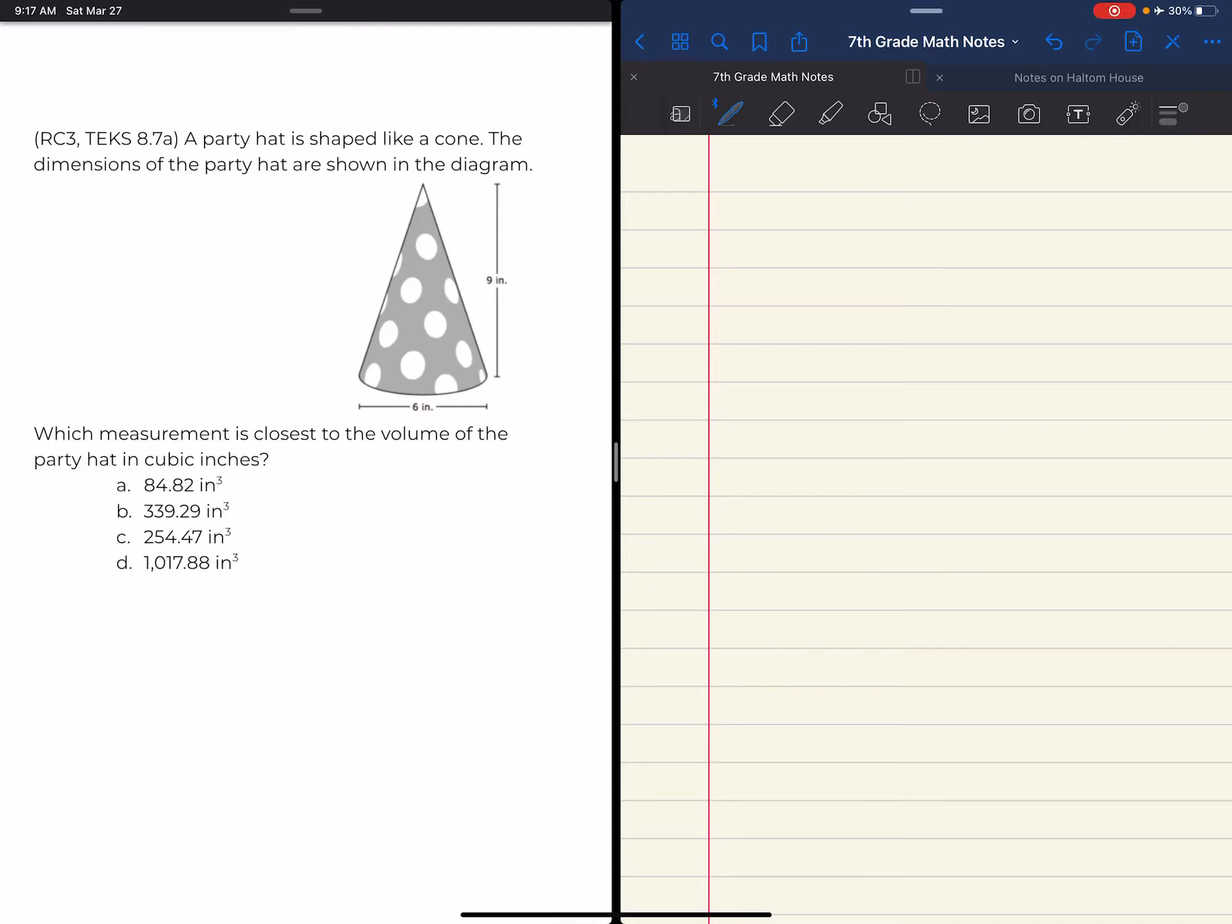Okay, beautiful humans, let's work through this problem. A party hat is shaped like a cone, which we know to be a circle pyramid. The dimensions of the party hat are shown in the diagram. We have a 6-inch diameter and a 9-inch height. Which measurement is closest to the volume of the party hat in cubic inches?